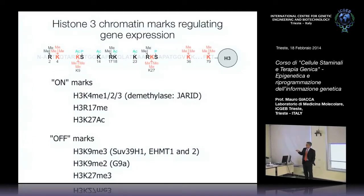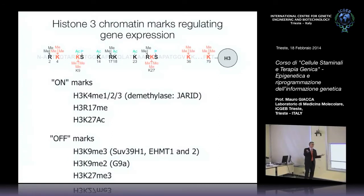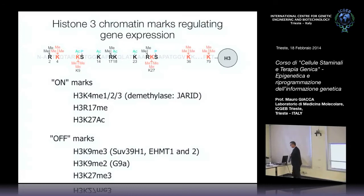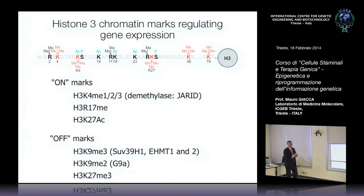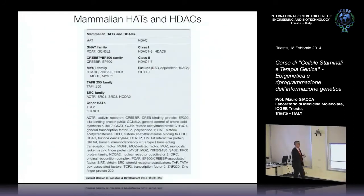In generale una cromatina acetilata è una cromatina che viene trascritta; una cromatina fortemente metilata è una cromatina repressa — con l'eccezione della metilazione della lisina 4 di H3, che è invece attivante. Nella cellula ci devono essere enzimi che metilano e demetilano, che acetilano e deacetilano, e comincia una corsa a identificarli.